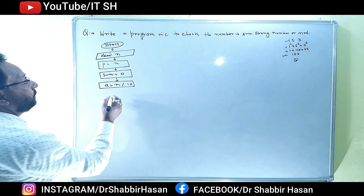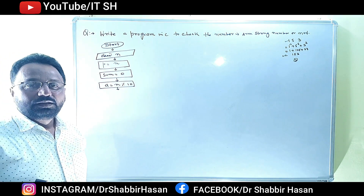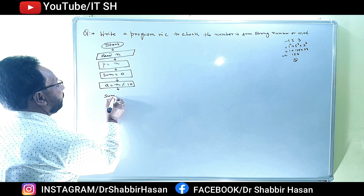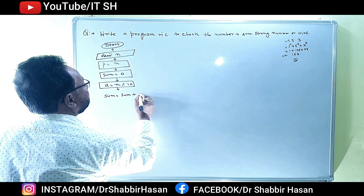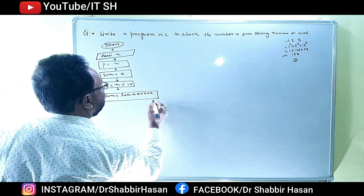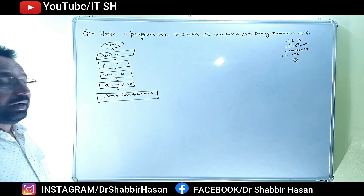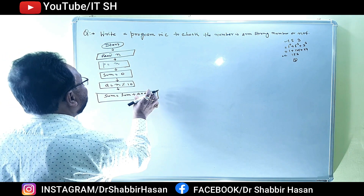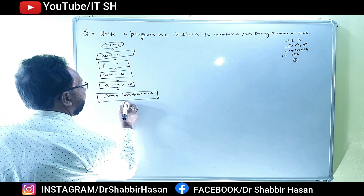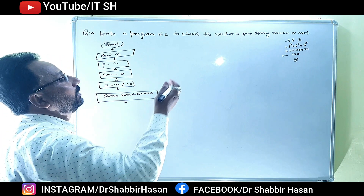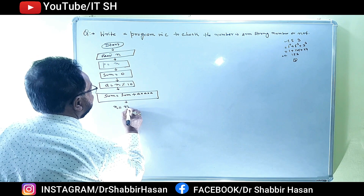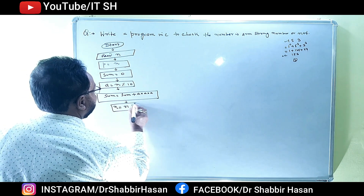अब एक pattern बनाना है - इसको multiply करना है। तो यहाँ पर लिखेंगे sum = sum + (A × A × A)। ठीक है - sum = A into A into A। अब जब number का modulus मिल गया और उसका cube निकाल लिए और sum में जोड़ देंगे। उसके बाद N = N / 10 करिएगा - तो 3 वाला part truncate हो जाएगा और 15 बचा आ जाएगा।